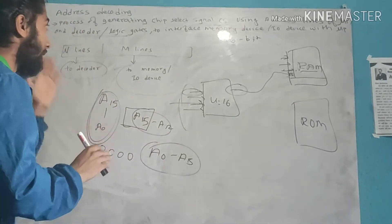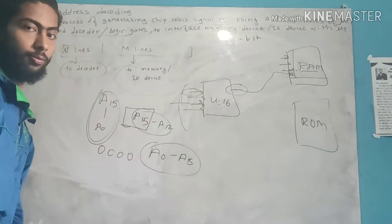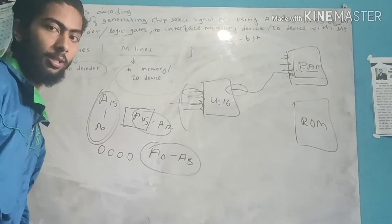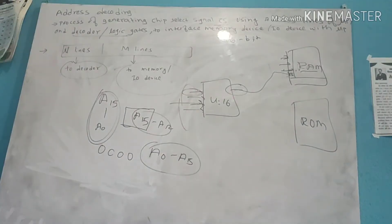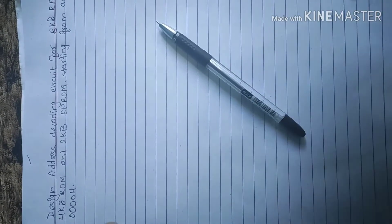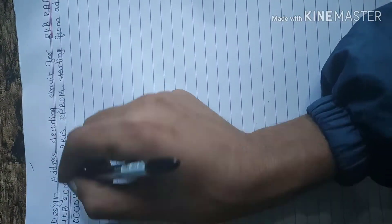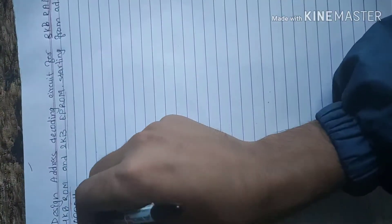This is the process of address decoding. How it is performed in microprocessor 8085 — we will do some examples. Here is an address decoding circuit design question: 8KB RAM, 4KB RAM, and 2KB EPROM.